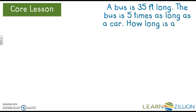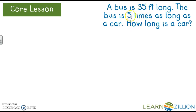Here was the problem from the beginning of the lesson: a bus is 35 feet long, the bus is 5 times as long as a car — how long is the car? Think about the two examples we did: one was multiplication, one was division. Think about whether you'd want to do 35 divided by 5, or 35 times 5. You can use a bar model or a number sentence, and then think about whether your answer makes sense for the problem. Pause the video, solve it, then I'll show you how.